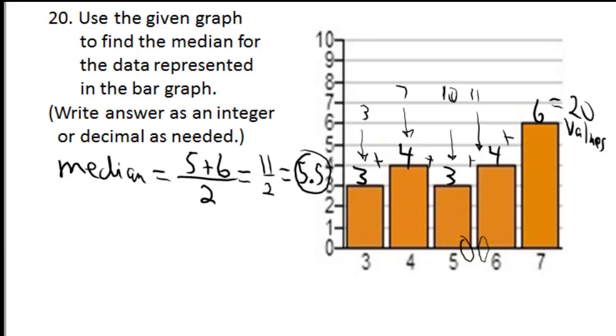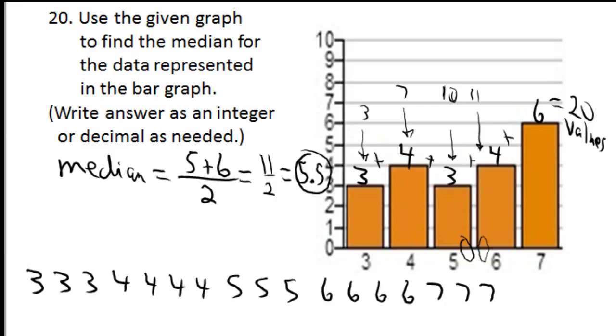If it really bothers you to do it that way, you can translate it to a frequency table and try it that way. Or you could actually just write everything out. You could say, well, I've got three threes. I have four fours. I have three fives. I have four sixes. And I have six sevens. Then you know that there are twenty, so between the tenth and the eleventh you'll have the median.